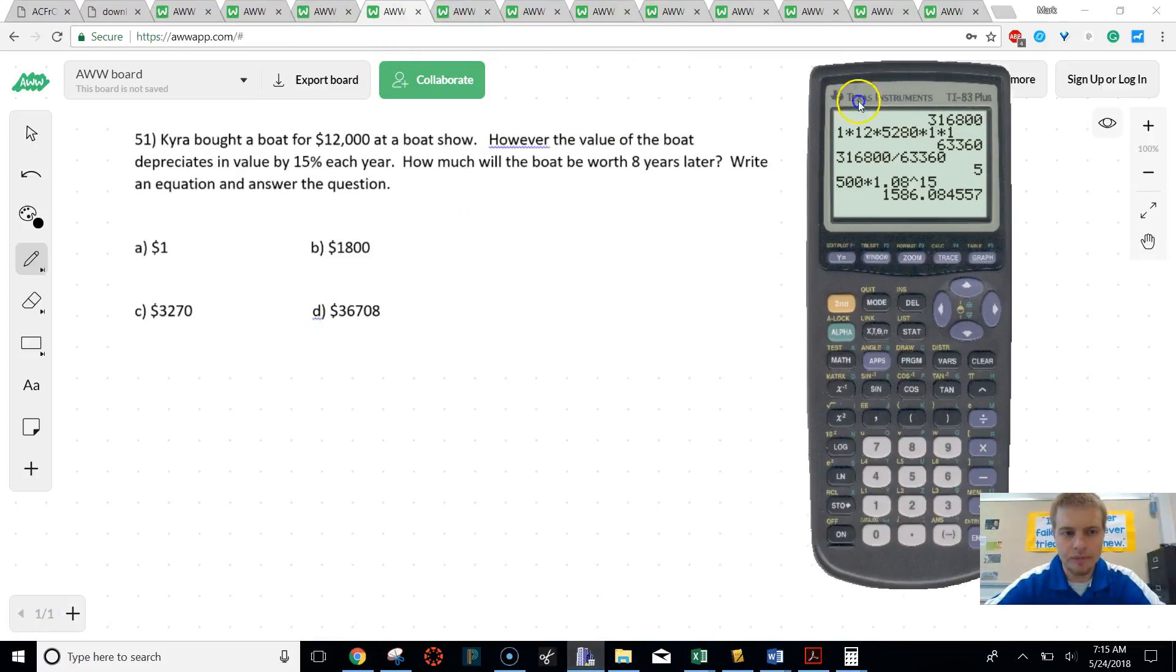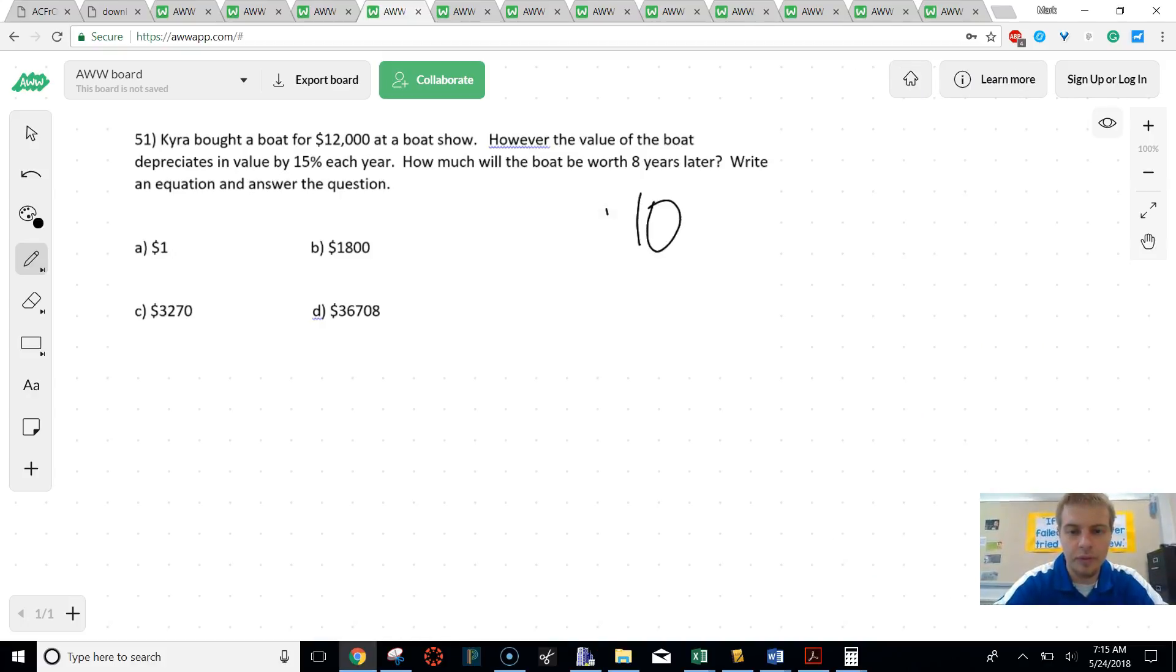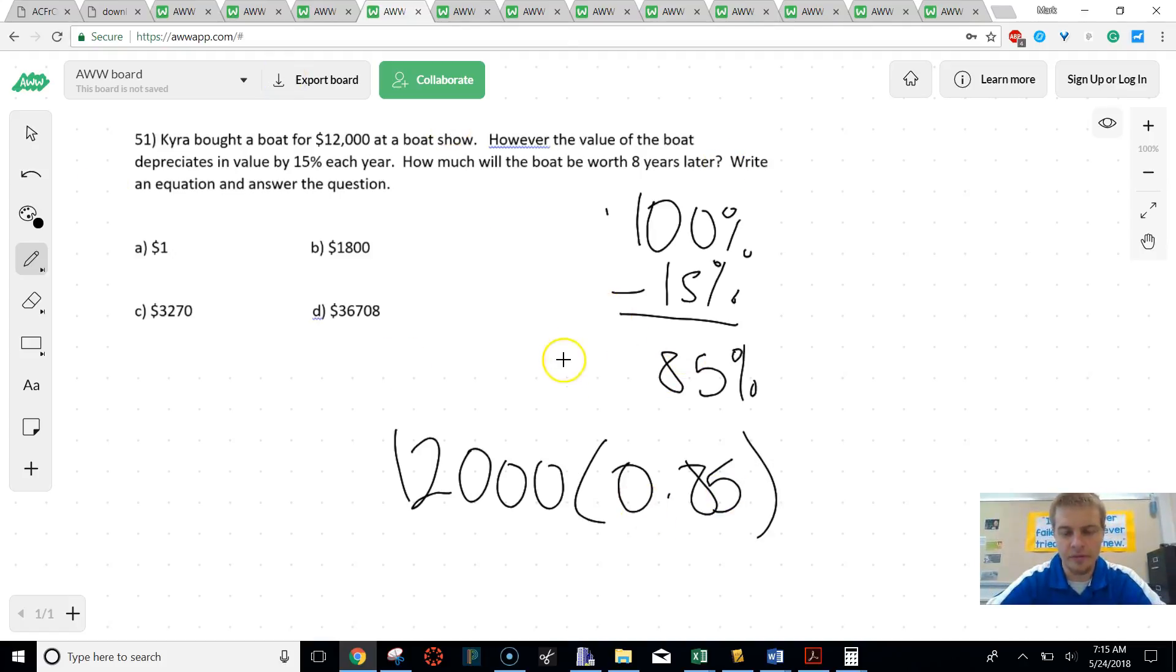Let's try the next one. In this problem, we have Kyra buying a boat, and now it's going to depreciate by 15%. So again, Kyra doesn't only own 15%. Like that's how much it's depreciating. She owned 100% of the boat, but since it's depreciating, it's going down by 15%, which means now she only owns 85% of the original boat. And so what we would do to get that equation is we would do 12,000, and since she's only, every single year, she's only owning 85% now of the original value, and we want that to happen for 8 years.